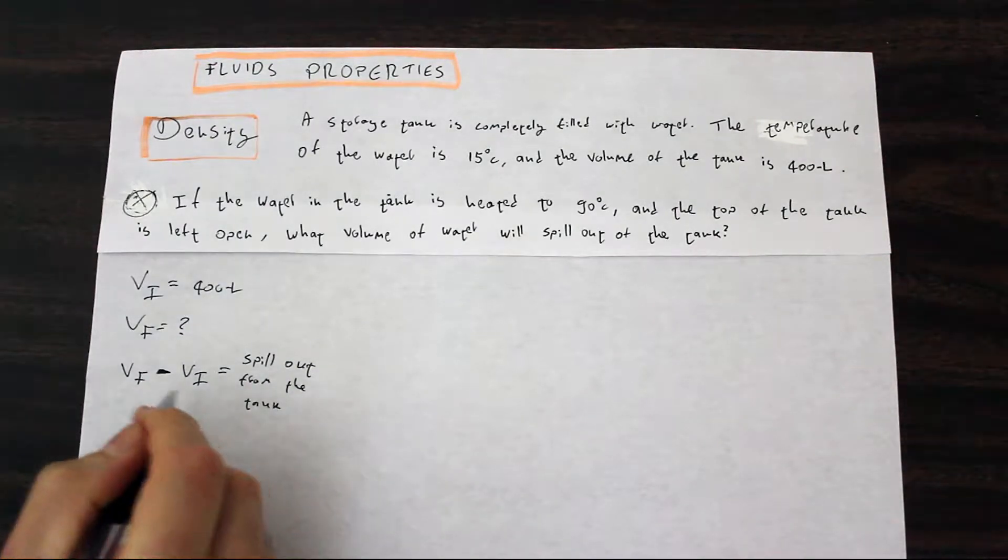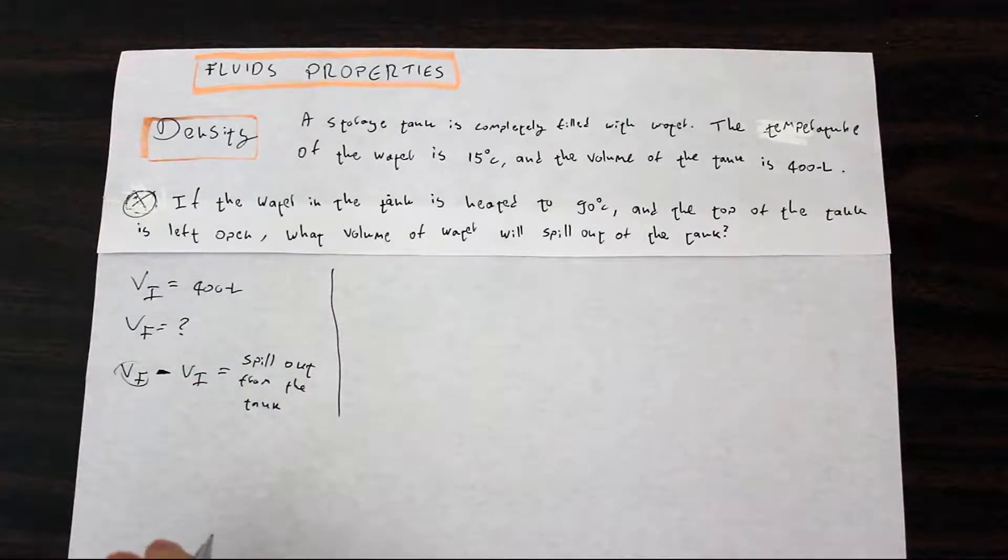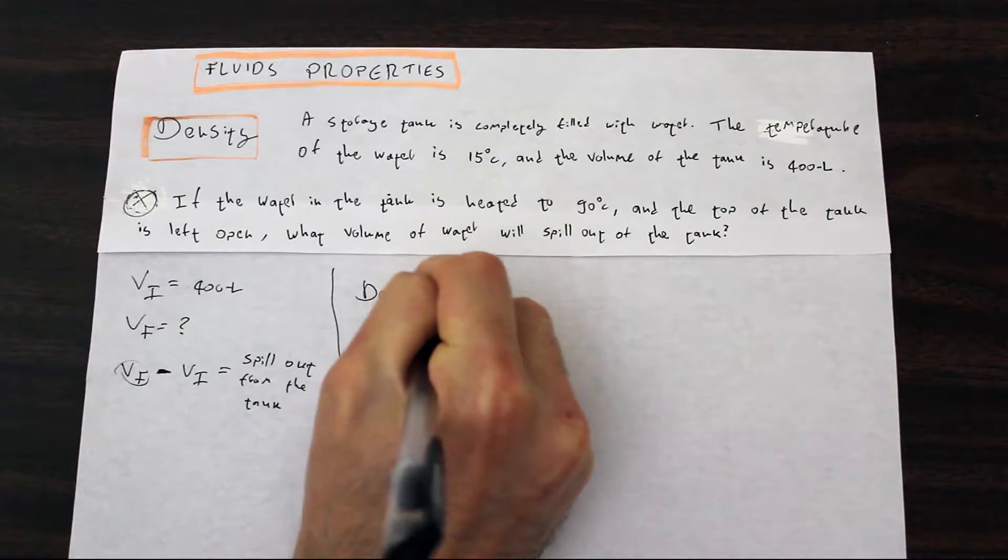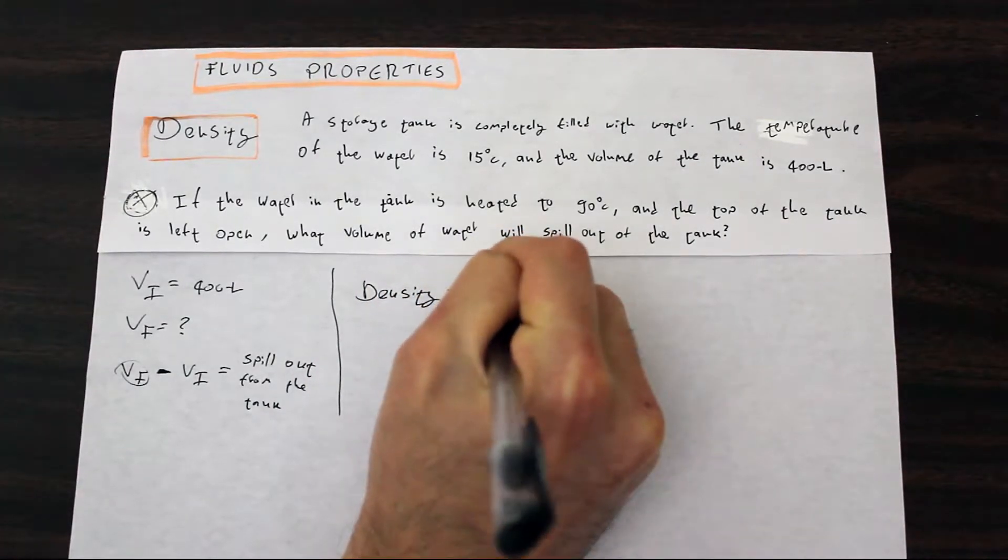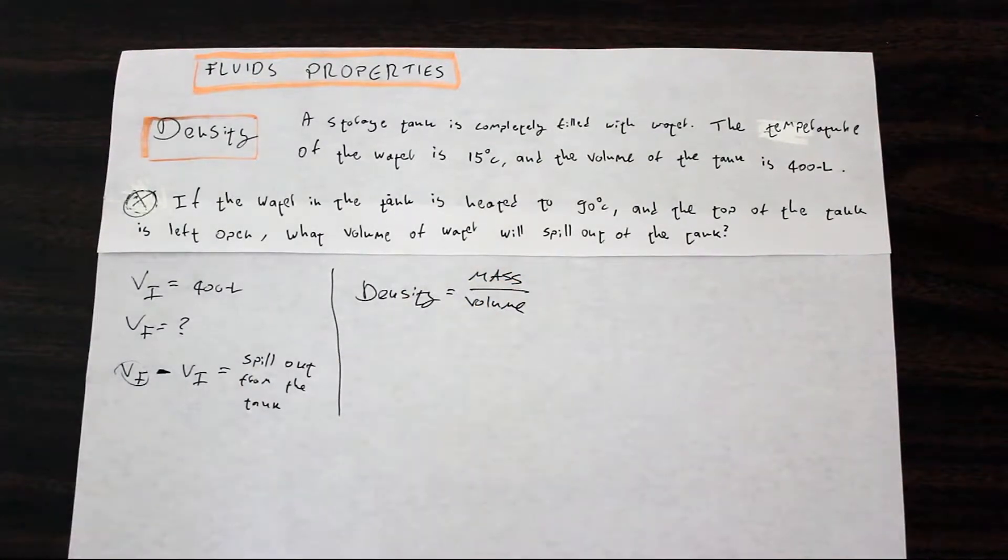Okay, so we need to find our V final. And to do that we're using one of the most known equations that you will basically see in the course, which is density is equal to mass over volume.